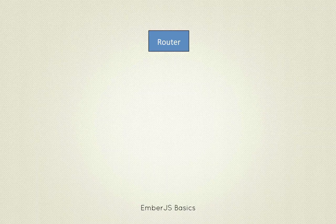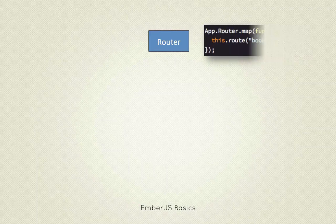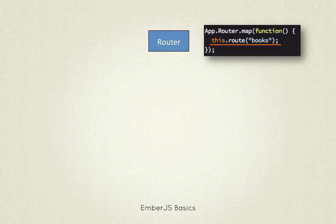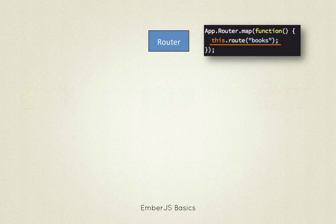The router translates this URL into a series of nested templates, each backed by a model. It does this by auto-generating several objects. Inside the map function of the router object, we define a route or resource. This simple line of code defines the URL route 'books' and generates several objects.